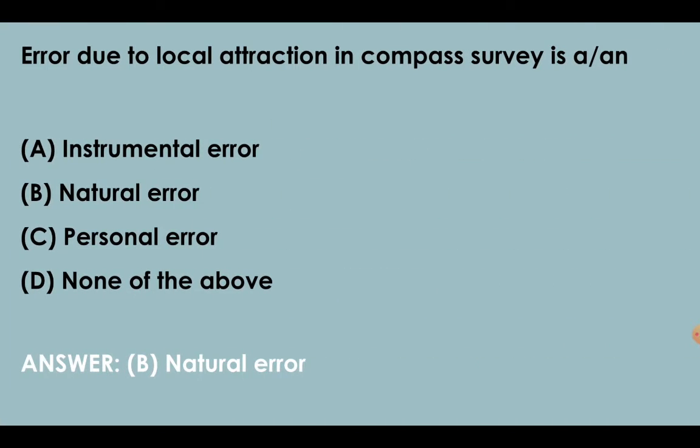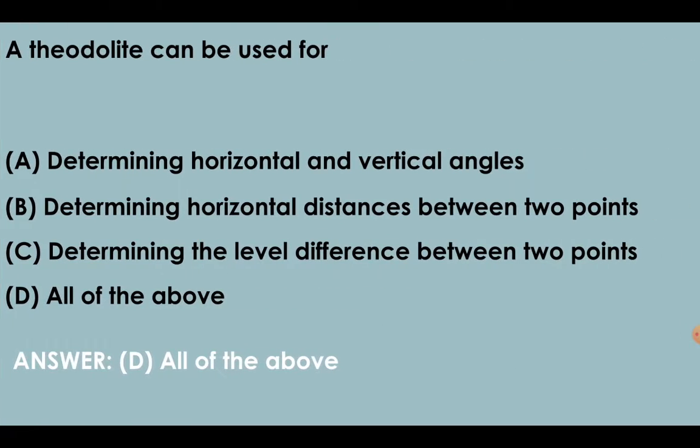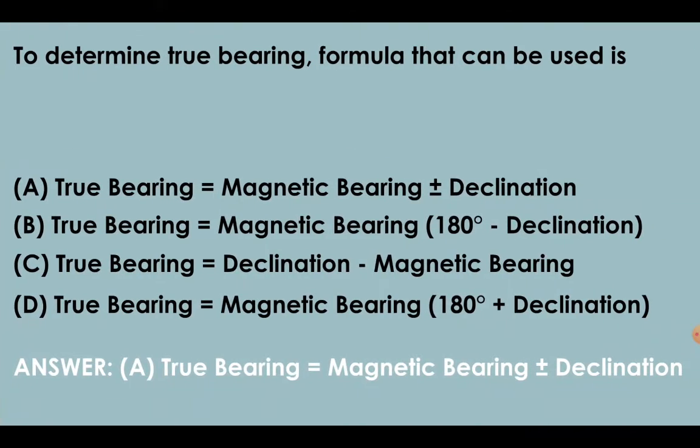Error due to local attraction in compass survey is a natural error. A theodolite can be used for determination of vertical and horizontal angles, determination of horizontal distance between two points, and level difference between two points. To determine true bearing, formula that can be used is: true bearing = magnetic bearing ± declination.